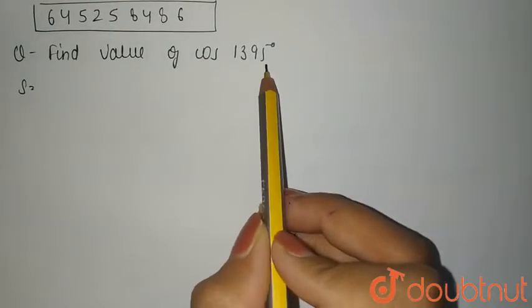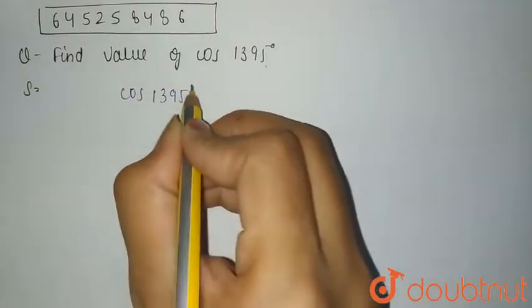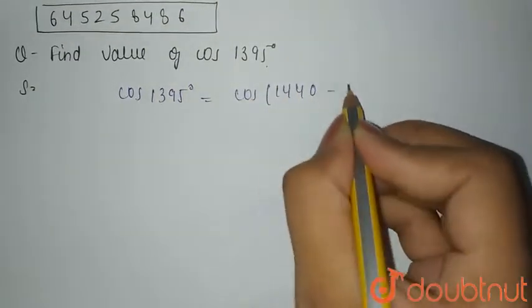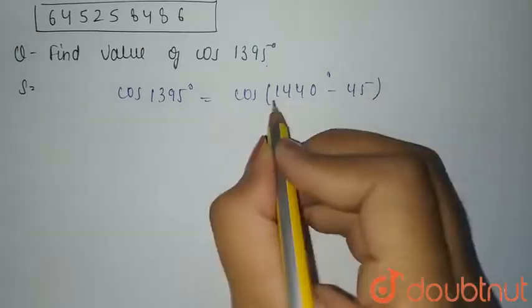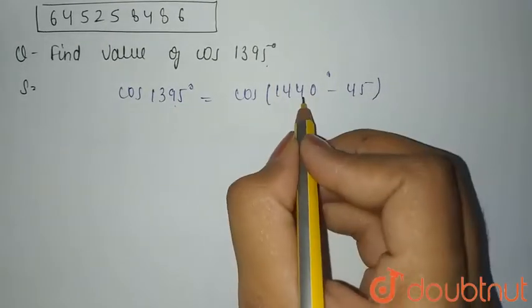So first of all, cos of 1395 degree is given and 1395 can be written as cos of 1440 minus 45 degree, as the difference of this is 1395 degree. And 1440 can be written as cos of 16 into 90 degree minus 45 degree.